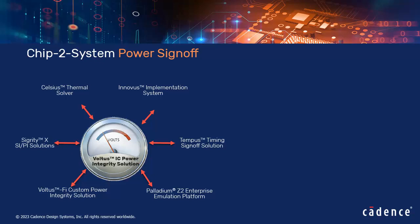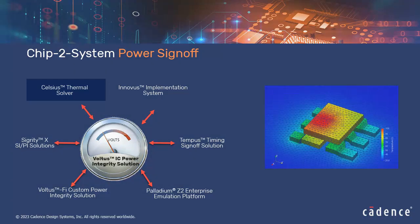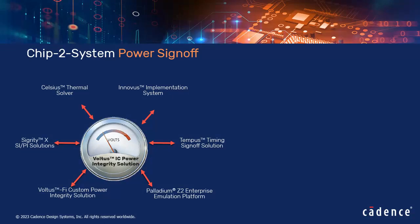The Chip 2 System Power Sign-off video series helps you understand how Voltus integrates with a wide breadth of key Cadence products to achieve faster system-level power integrity analysis and closure. The previous video in this series talked about Voltus IC power integrity solution integration with Celsius thermal solver for analyzing the complex interactions between electrical and thermal responses across chip, package, and board. In this video, you will be introduced to IR drop driven timing analysis supported in Voltus and Tempus.